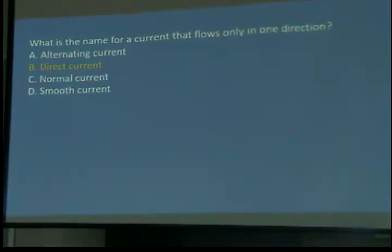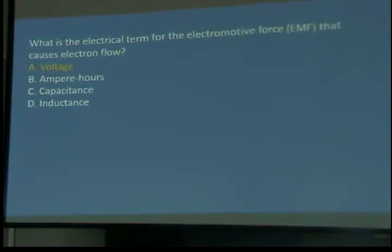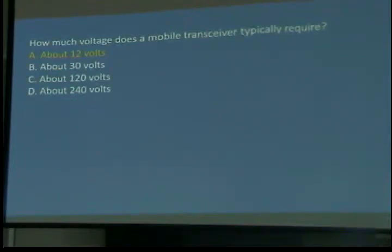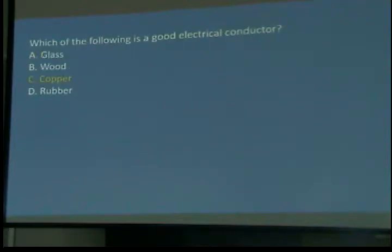By the way, what's the name for the current that flows back and forth? Alternating current or AC. What is the electrical term for electromotive force that causes electron flow? Remember I said E, voltage, is electromotive force. It's voltage, EMF. That's one of the... I don't know why we couldn't use one term, but we just got to do it. Now, this question everybody ought to know the answer to. What voltage does a mobile transceiver typically require? 12 volts because of a battery. It's designed to run off of a car battery.